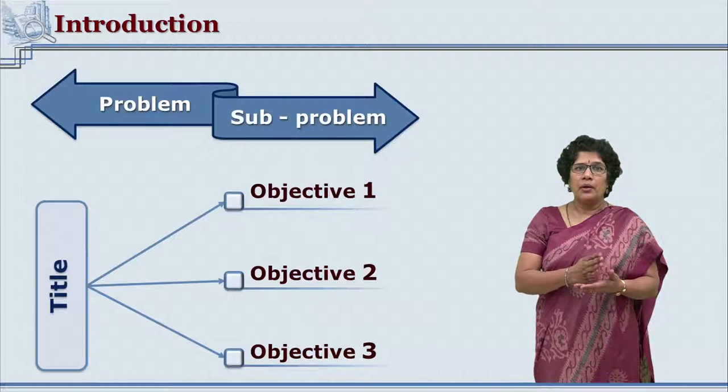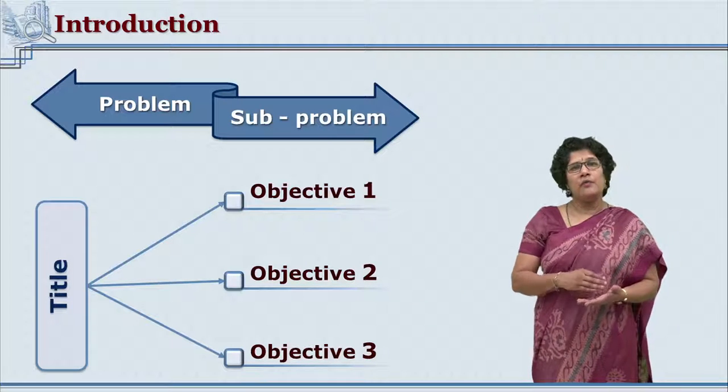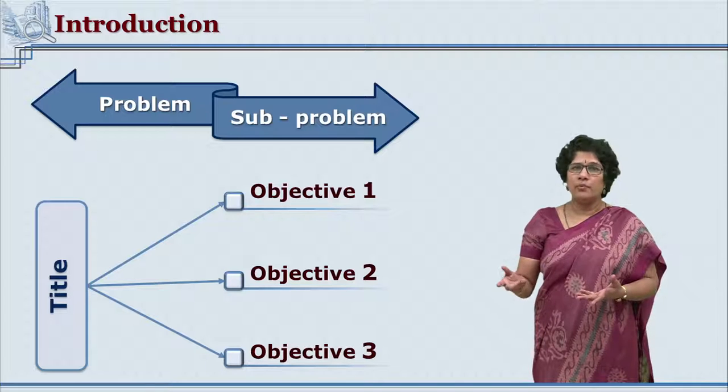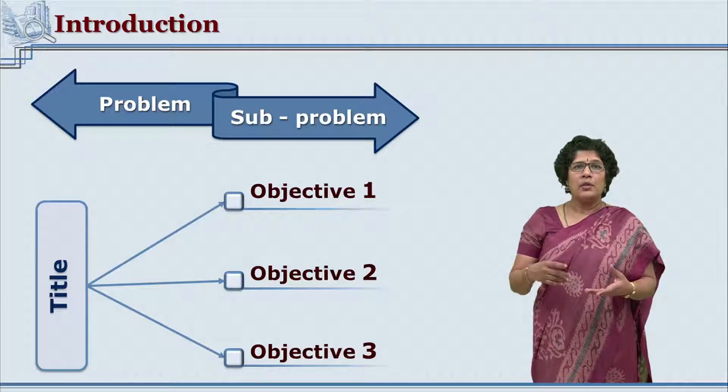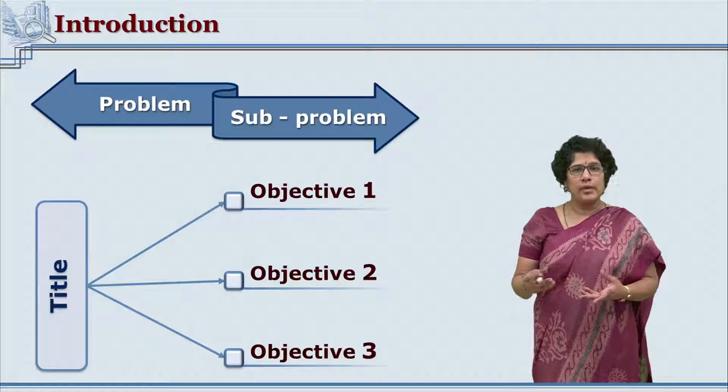These smaller problems or sub-problems are nothing but the objectives of the research. They are basically the purpose for which the research has been undertaken. A particular research title generates many objectives. The scope and depth of these objectives would depend on the choice of the researcher.